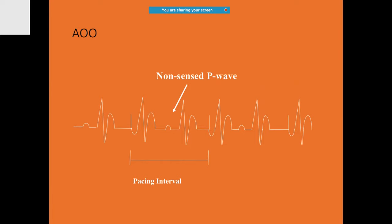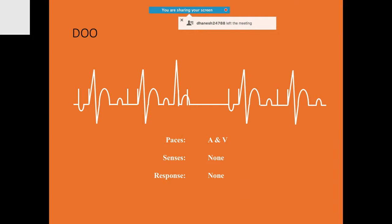AOO is the opposite of VOO — it takes care only of the atrium, pacing only the atrium without sensing. For example, in the third P wave there is a non-sensed P wave. DOO paces both atrium and ventricle but with no sensing and no response at all — no inhibitory or trigger response. For demand pacing with sensing, VVI is used.